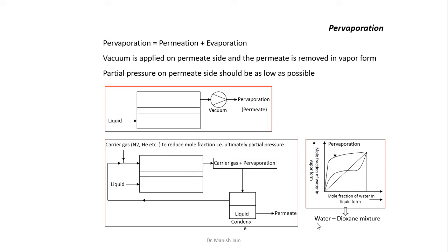This diagram also shows which type of mixture can be separated by the pervaporation process. Here you have the water-dioxane mixture. If you check the vapor-liquid equilibrium of the water-dioxane mixture, it forms an azeotropic mixture. Azeotropic mixtures are mixtures where the boiling points of both components are nearly equal, so they cannot be easily separated by the traditional distillation process.